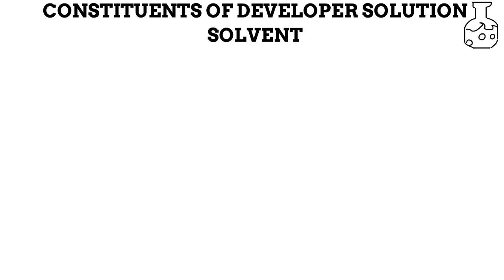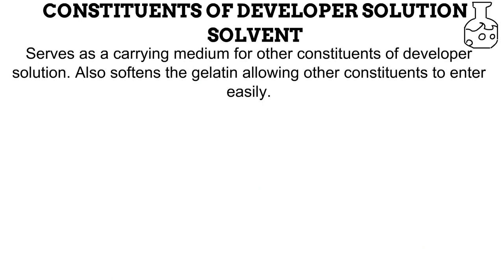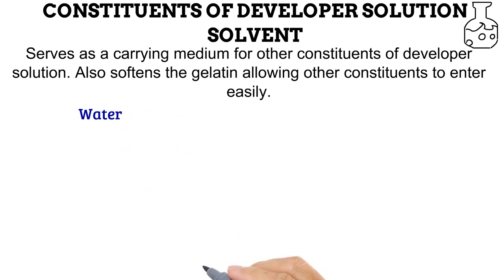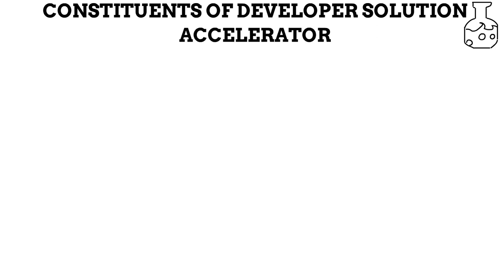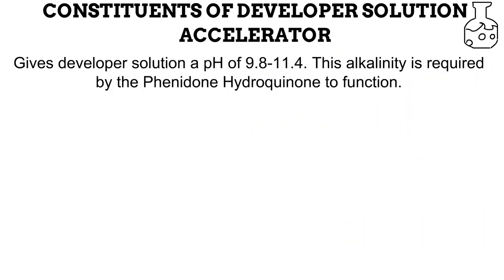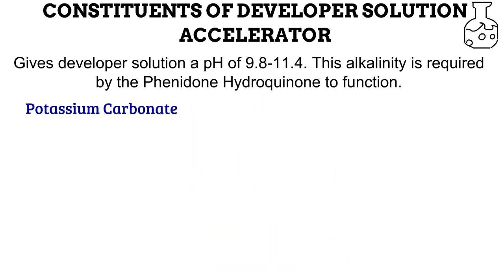Next is the solvent. The solvent serves as the carrying medium for other constituents, and also softens the gelatin of the film, allowing other constituents to enter easily. The most common solvent used is water. Next is the accelerator. The developing agent, phenidone-hydroquinone, needs an alkaline or basic environment to function. The accelerator provides an alkaline pH of between 9.8 and 11.4. The most common accelerator used is potassium carbonate.